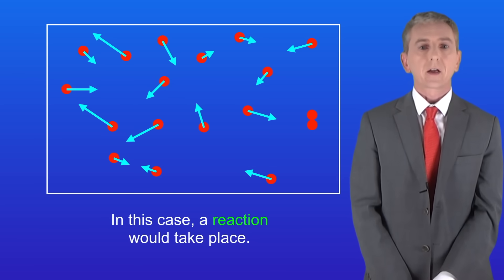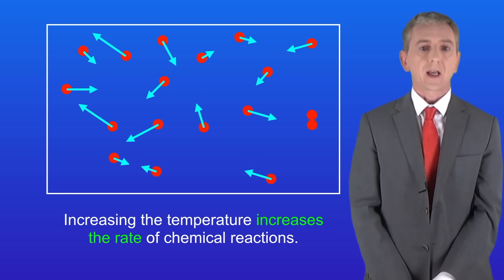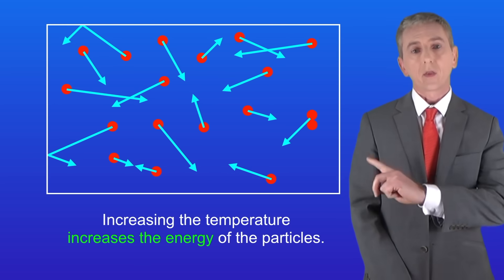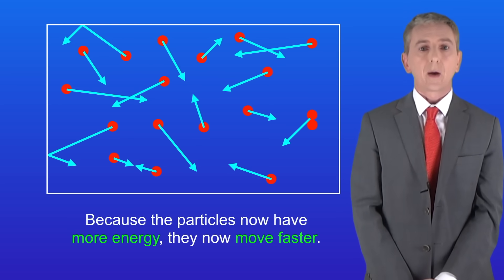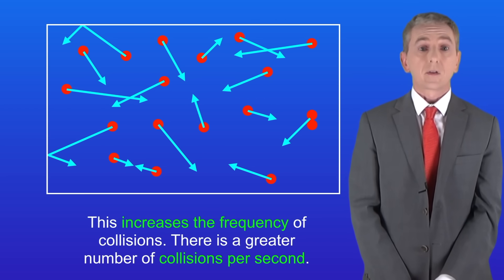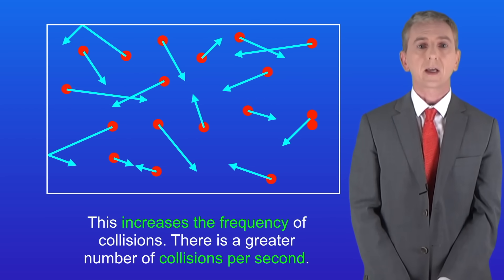So what would happen if I increase the temperature? Increasing the temperature increases the rate of chemical reactions. That's because increasing the temperature increases the energy of the particles, like this. Because the particles now have more energy, they now move faster. This increases the frequency of collisions. In other words, there's a greater number of collisions per second.